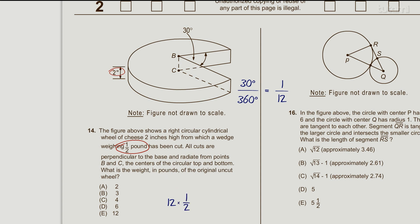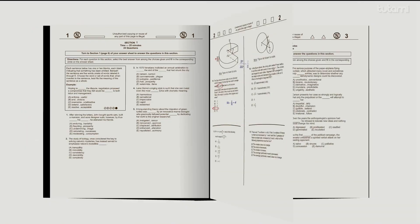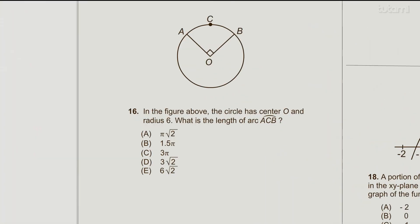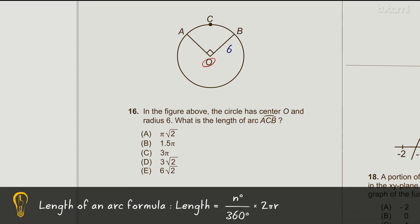Here in this next January 2011 example, we're given circle O has a radius of 6. What is the length of arc ACB? Another easy problem. First, we're asked what the arc is, so I can go back to our length of an arc formula. Let's start by figuring out what the circumference of the entire circle is. 2πr equals 2π(6), which gives us 12π.